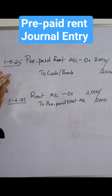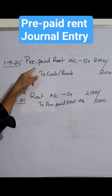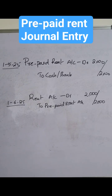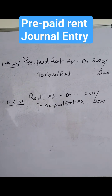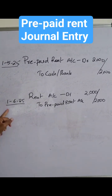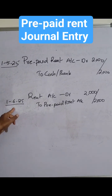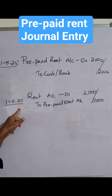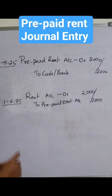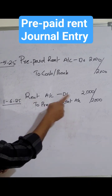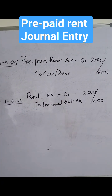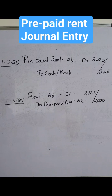On May 1, 2025, the entry is: Prepaid Rent Account debit to Cash or Bank. Then on June 1, 2025, the entry is: Rent Account debit to Prepaid Rent Account.